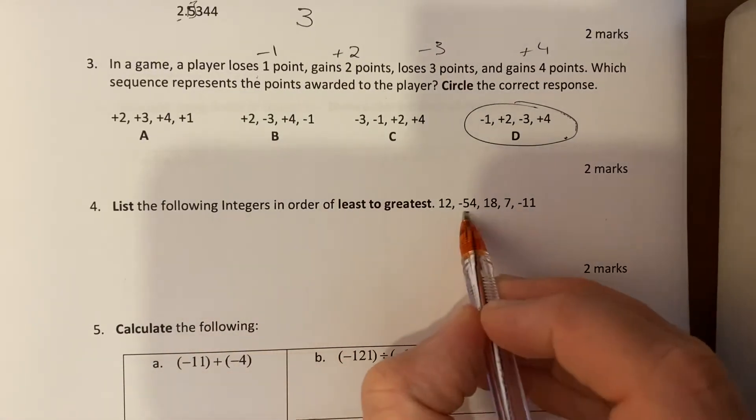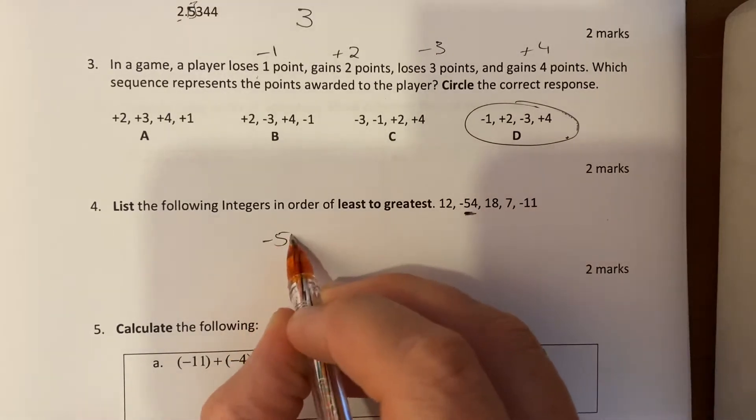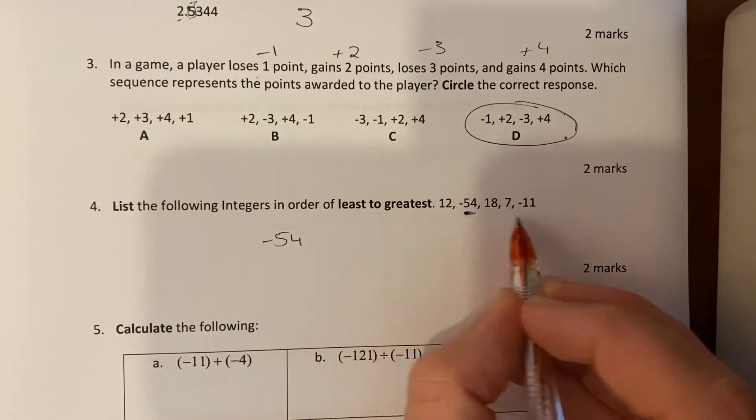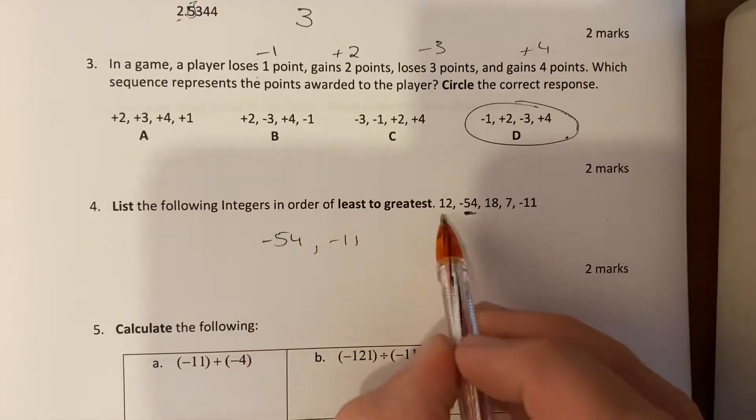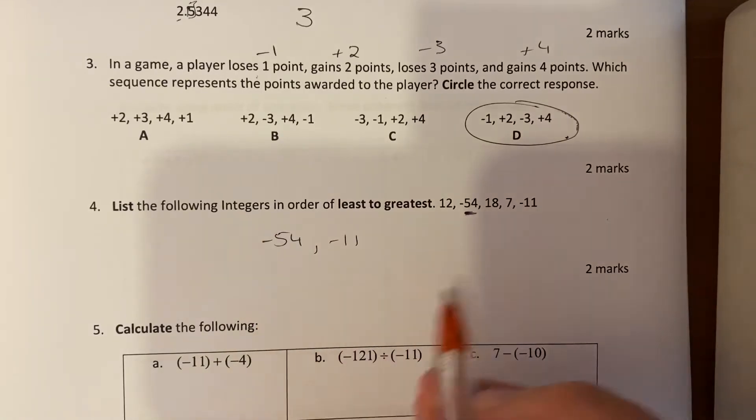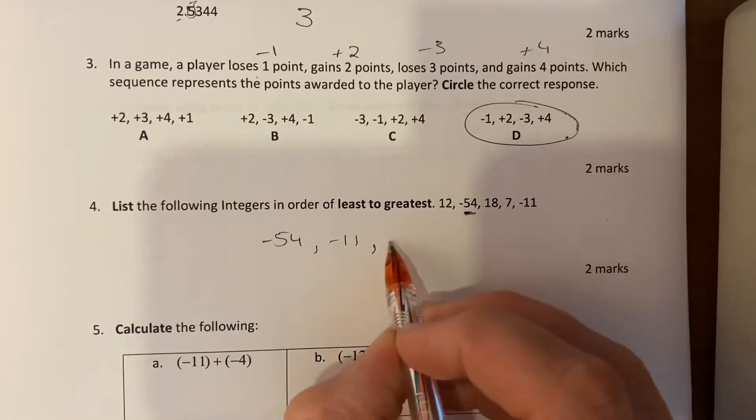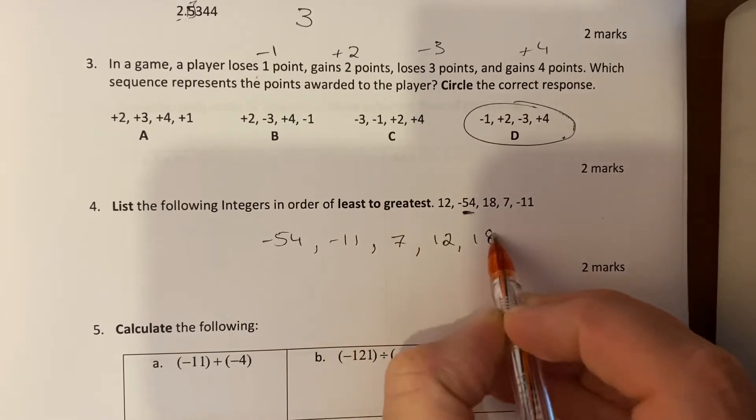List these from least to greatest. So the smallest number here is this negative 54 - it's way back into the negatives. Then comes negative 11. Any positive number is gonna be bigger than a negative number. Next is 7, then 12, then 18.